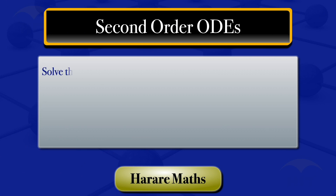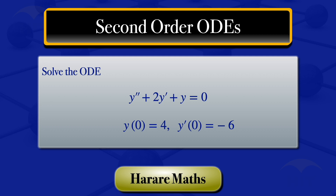In this video, I'm going to solve the ODE y double-prime plus 2y prime plus y equals 0, subject to the initial conditions y(0) equals 4 and y prime(0) equals minus 6.